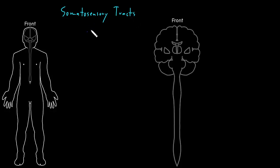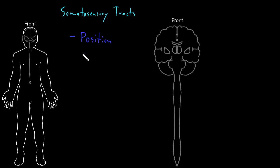The different types of somatosensory information tend to travel in different pathways as they move through the central nervous system. In general, the different types of somatosensation break down into two big categories. The first includes position sense, vibration sense, and fine touch sense — or very precise touch sense information.